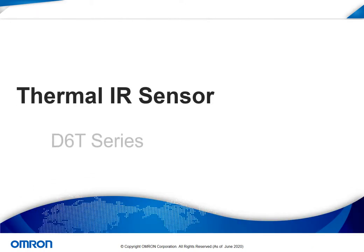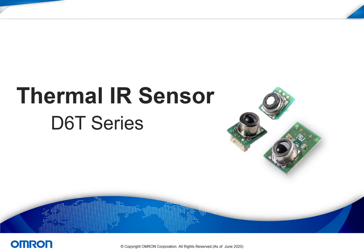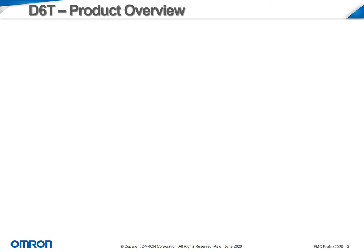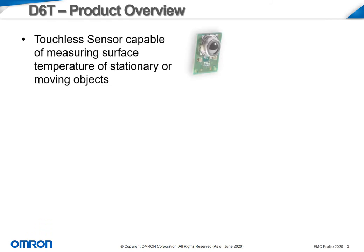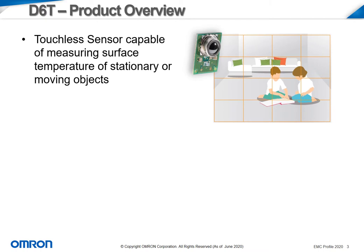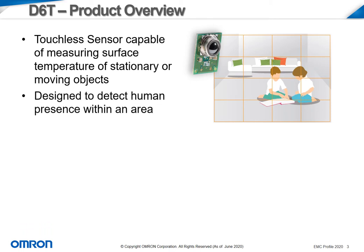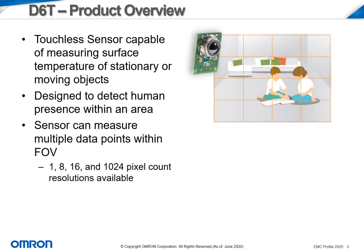For the first part of this presentation, we will go over the D6T thermal IR sensor, available in several different variations. The D6T sensor uses IR technology to read the surface temperature of both stationary and moving objects. With this ability, the sensor is able to detect human presence even when a person is not moving. Depending on the module used in the D6T family, the sensor can measure multiple data points within its field of view.